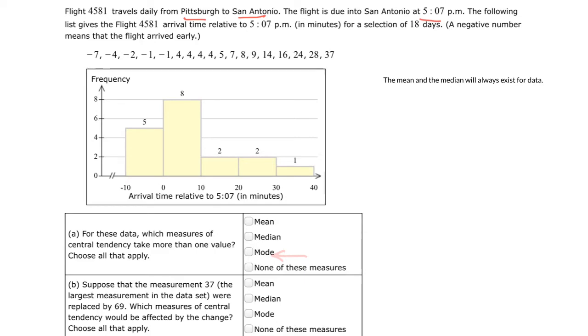However, the mode, that's not the case. So let's take a look at our data set and determine if indeed we have some values that occur more than once. So we have two negative ones, but we have one, two, three, four fours.